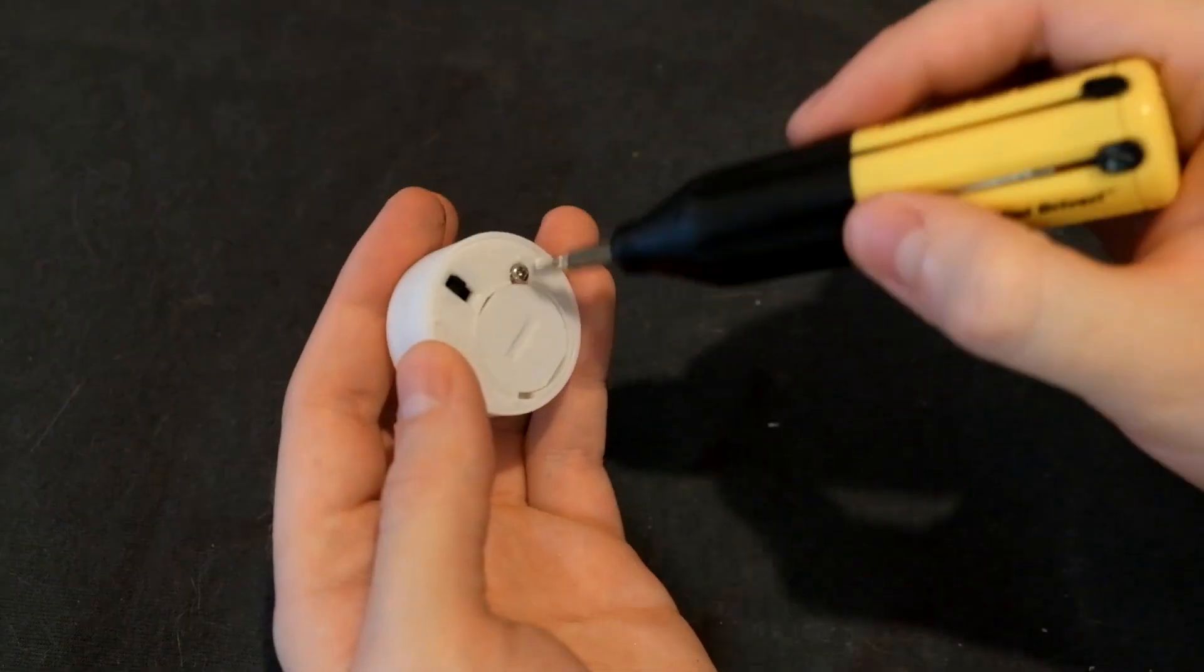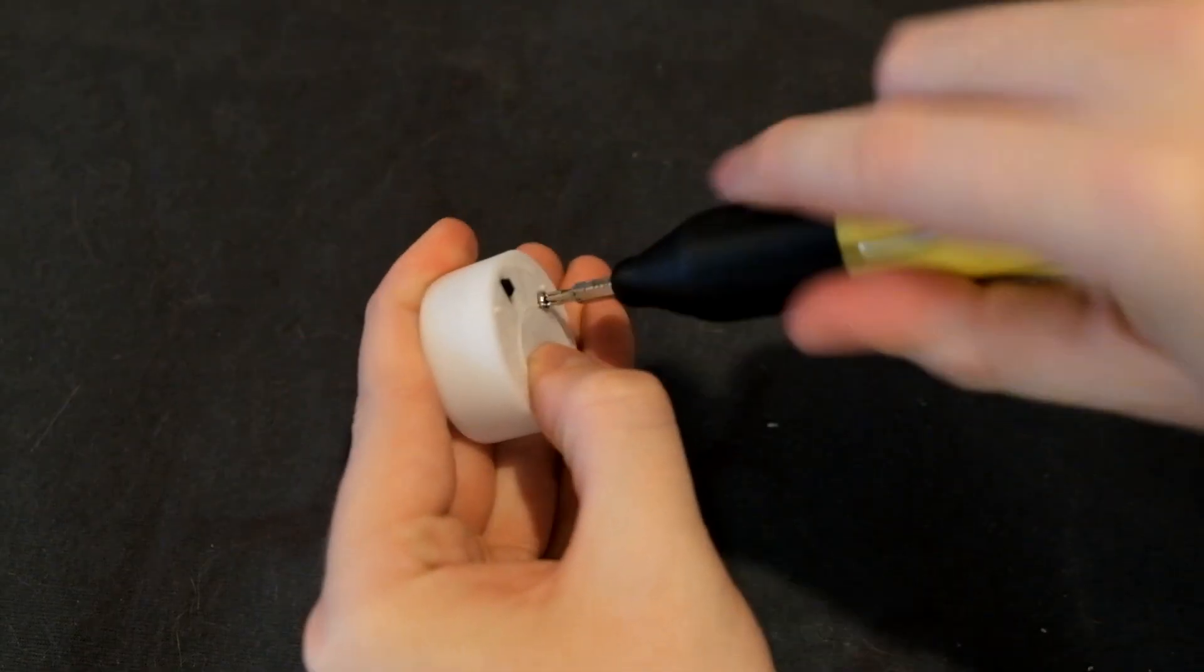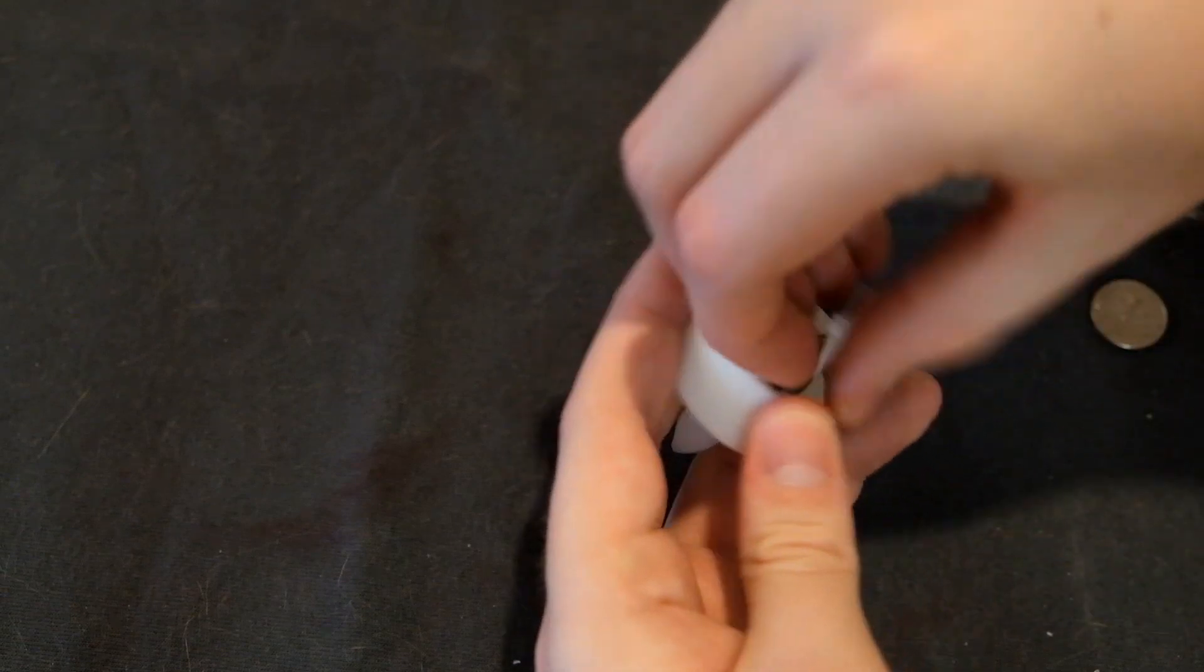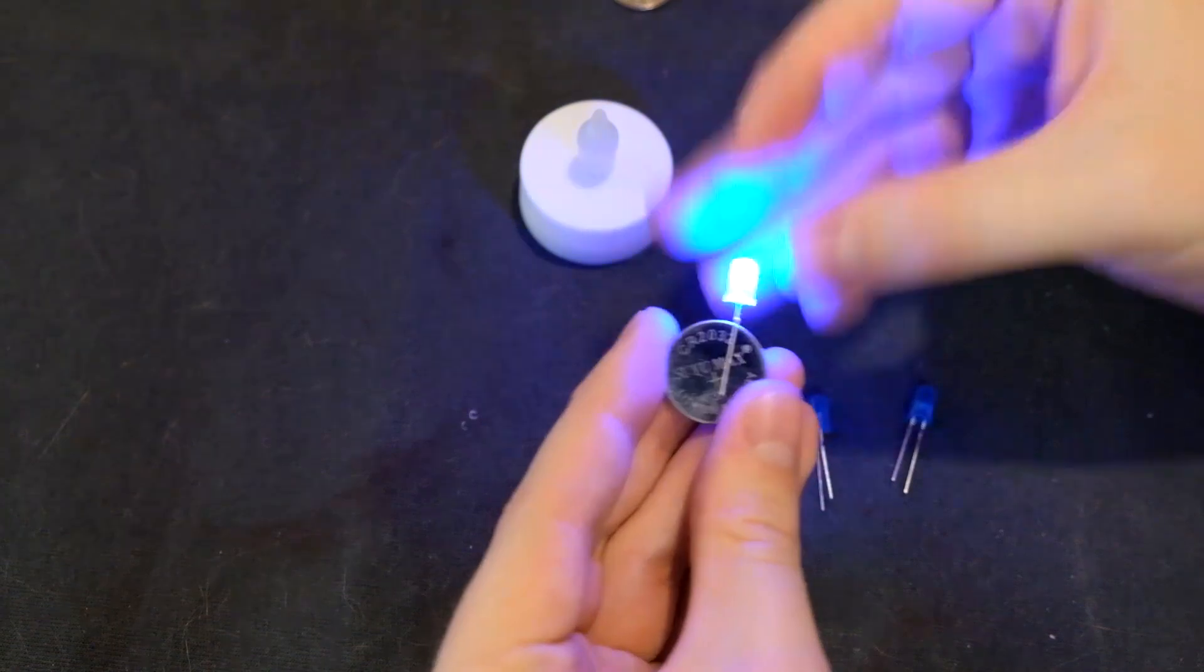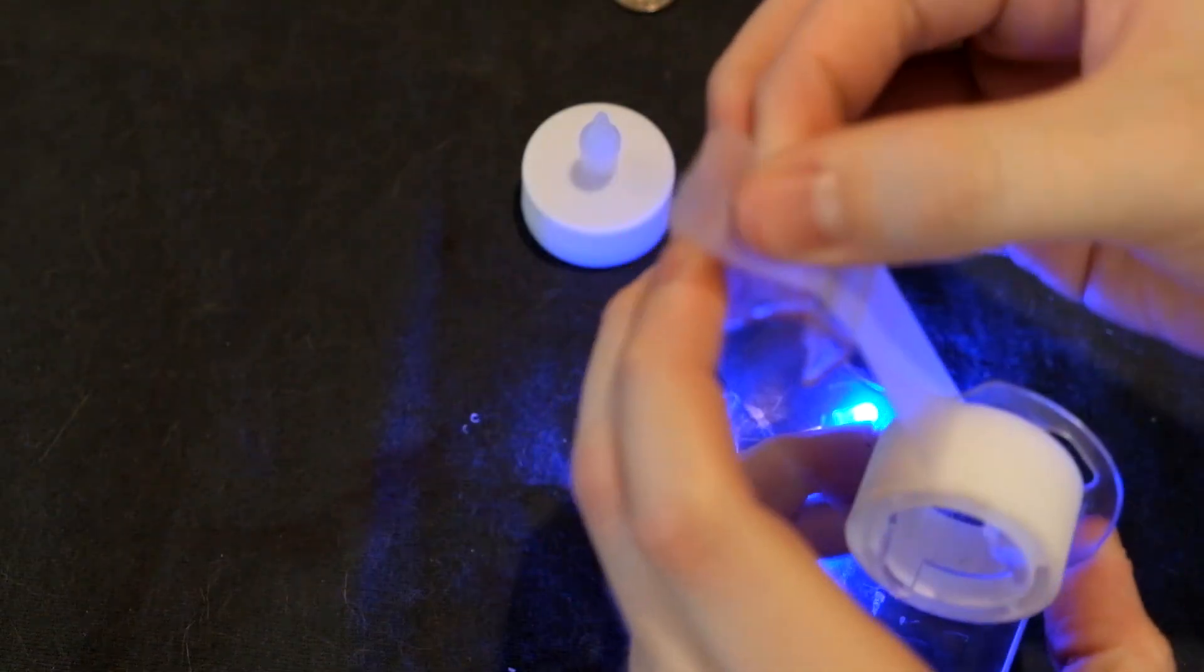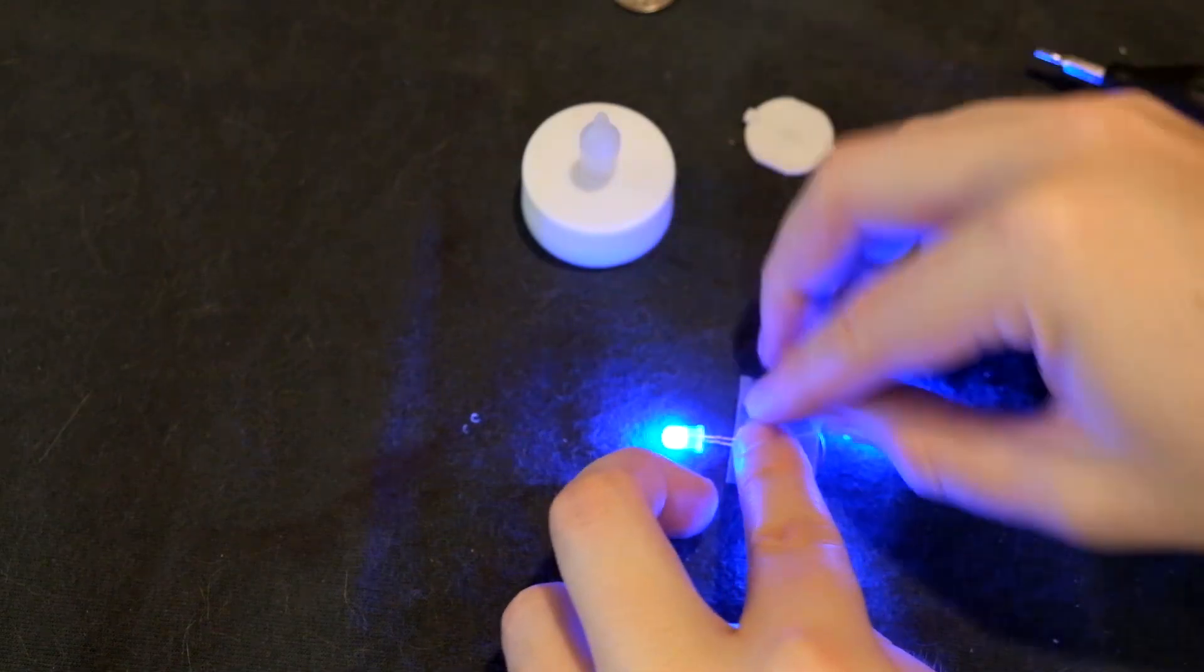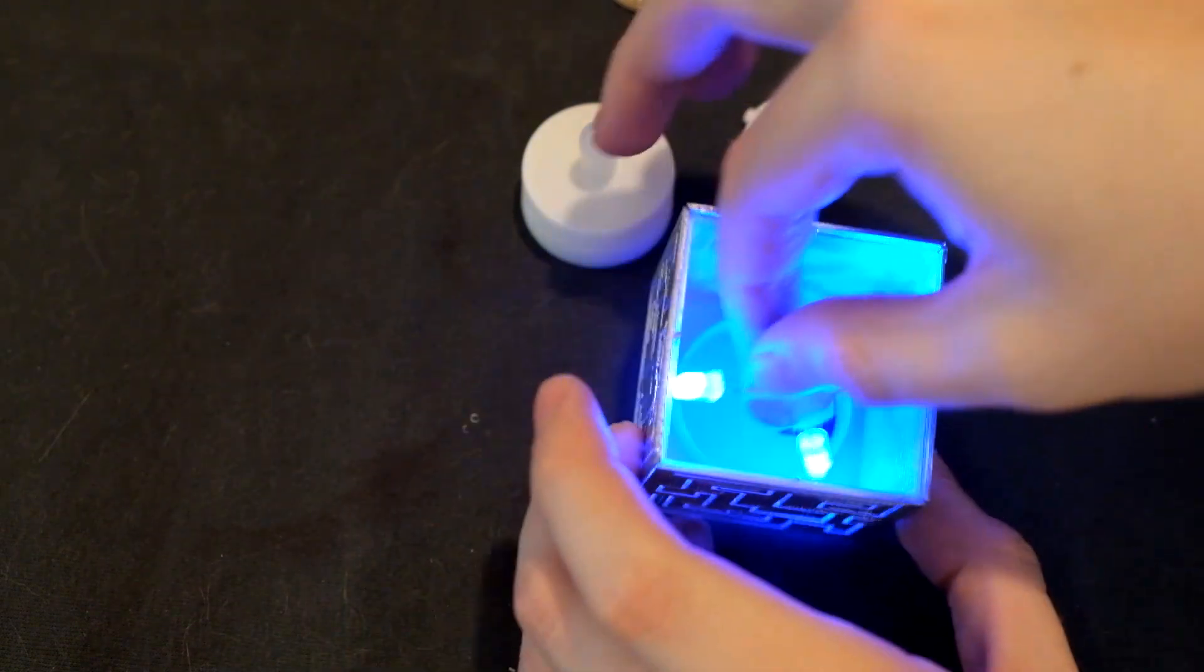Another way to add light to the cube is to open the LED candle and take out the battery. You can attach LEDs directly onto the battery and it should produce light. You can tape that together and drop it inside the cube. You can have any colored LEDs you want.